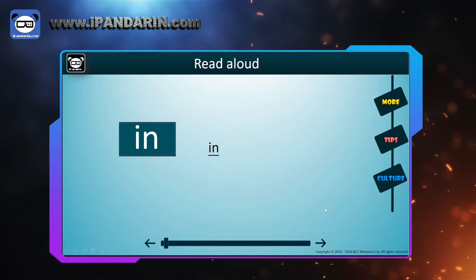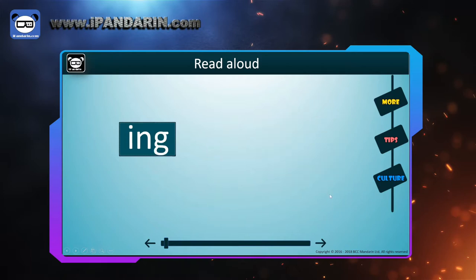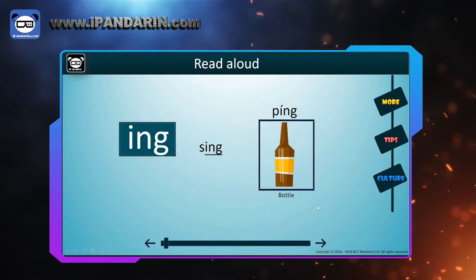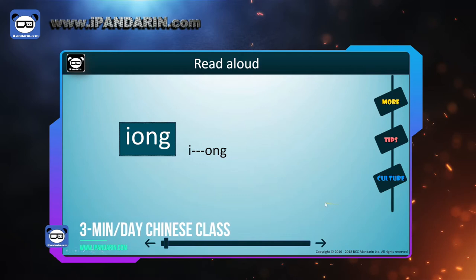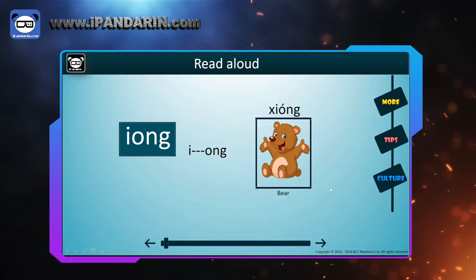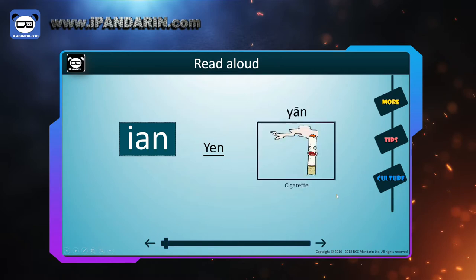IU — repeat after me. And in Chinese, 林 (lín), which means forest. IN — repeat after me. And in Chinese, 瓶 (píng), which means bottle. ING — from 'i' to 'ng', read it faster. And in Chinese, 熊 (xióng), which means bear. IONG — And in Chinese, 烟 (yān), which means cigarette.